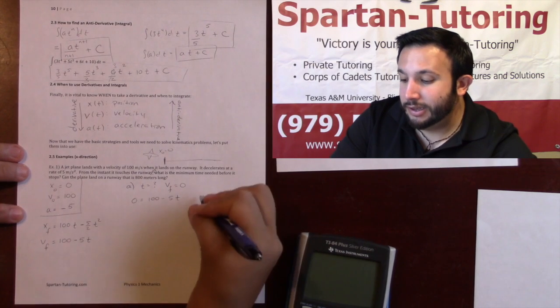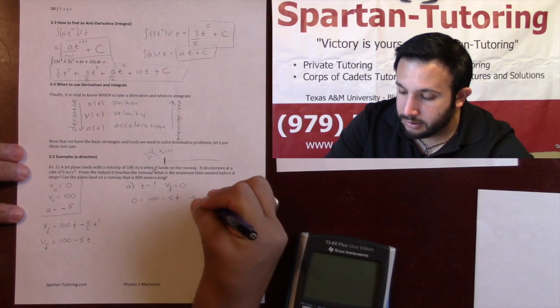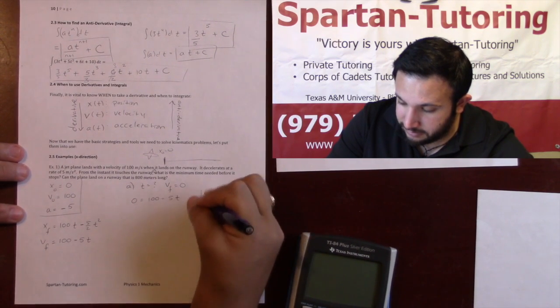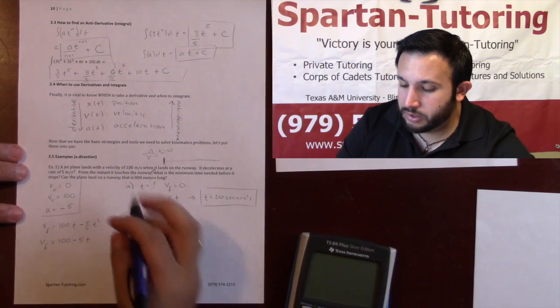I can just use this equation right here. Plugging zero into my final velocity: 0 = 100 - 5t. You can do the algebra, the algebra to this is pretty easy. Solve for t. We get t is equal to 20 seconds. So it takes 20 seconds for it to come to a stop.